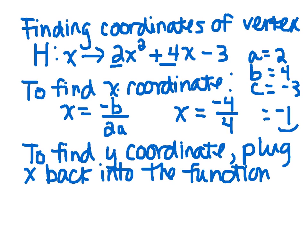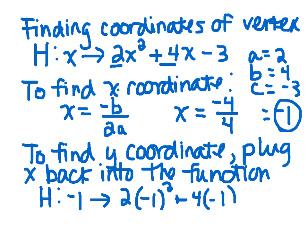So in this case, x is negative 1, and essentially what I'm finding is h at negative 1. It is 2 times negative 1 squared plus 4 times negative 1 minus 3. Following order of operations, I know that I do my exponent first. Negative 1 squared is 1 times 2 is 2, positive 4 times negative 1 is negative 4, minus 3. 2 minus 4 is negative 2, minus 3 is negative 5. So the coordinates of the vertex for this function are negative 1, negative 5.